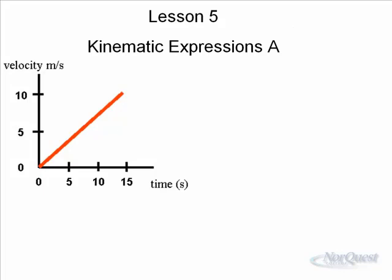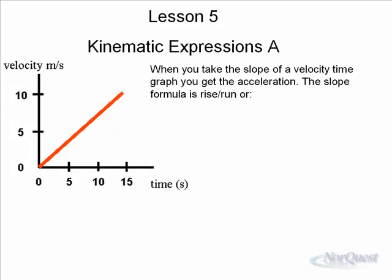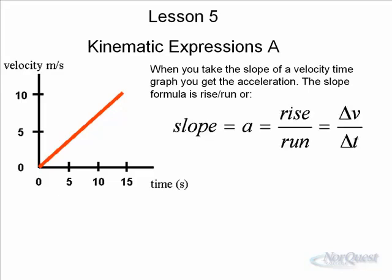When you take the slope of a velocity-time graph, what do you get? You should know that you get acceleration. The slope formula is rise over run. Slope equals acceleration. Acceleration equals the rise over the run. The rise over the run is equal to the change in velocity, which is the rise, over the change in time, which is the run. When we put this by definition, change is final minus initial.